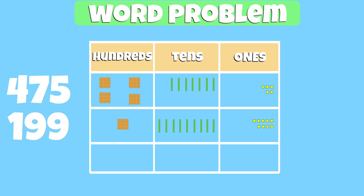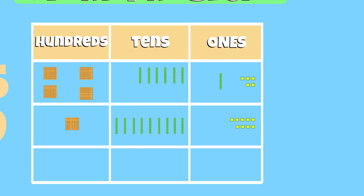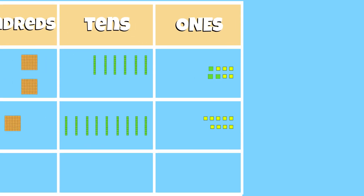Now we can subtract within each place value starting at the ones place. Since we cannot subtract 9 from 5, we need to regroup and move 1 ten to the ones place. We now have 15 ones. We can subtract 15 minus 9, and that leaves us with 6.